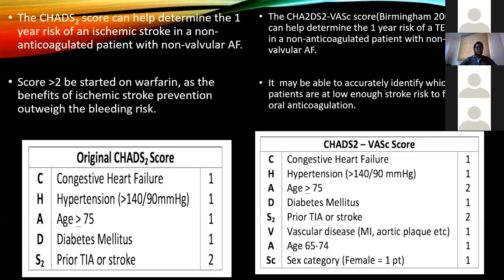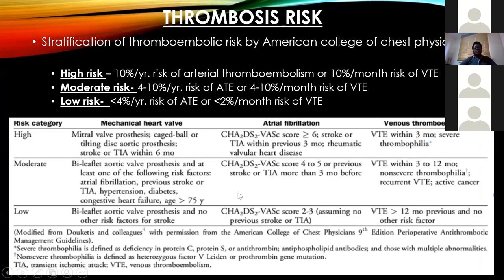The CHADS score and the CHADS-VASc score are both used. The CHADS-VASc score has extra parameters that provide more accurate identification of patients with low enough risk to forgo anticoagulation, and also gives a better stratification of thrombosis risk. It gives a different score for patients above 75 and a different score for patients 65 to 74. This table is what you use to score the CHADS-VASc score for atrial fibrillation risk.